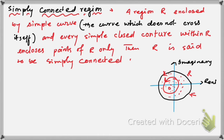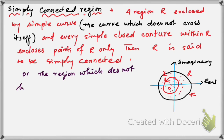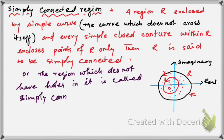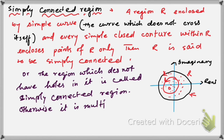We can say: a region that doesn't have holes in it is called a simply connected region. Otherwise, if your region is not simply connected, then it is a multiply connected region.